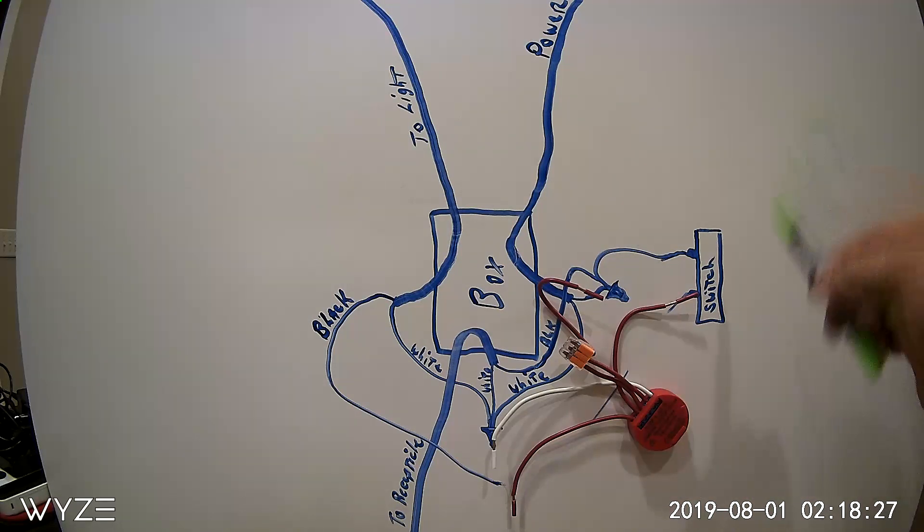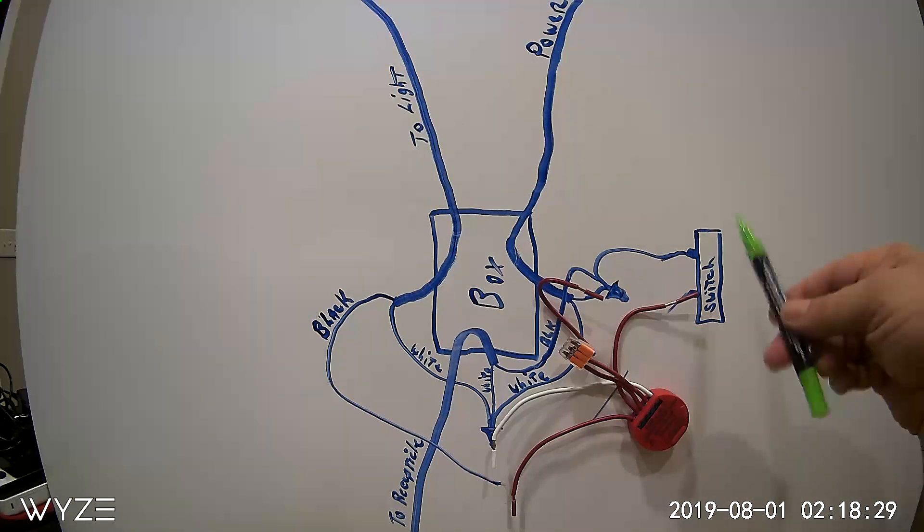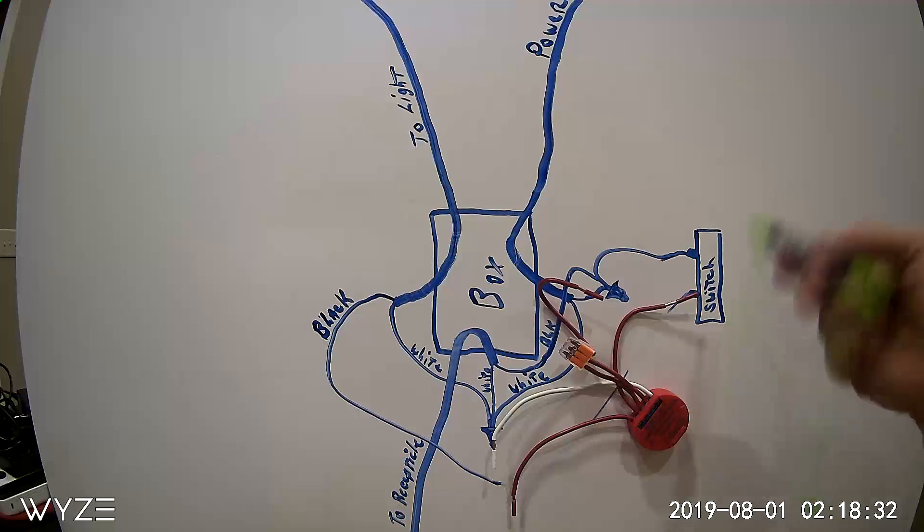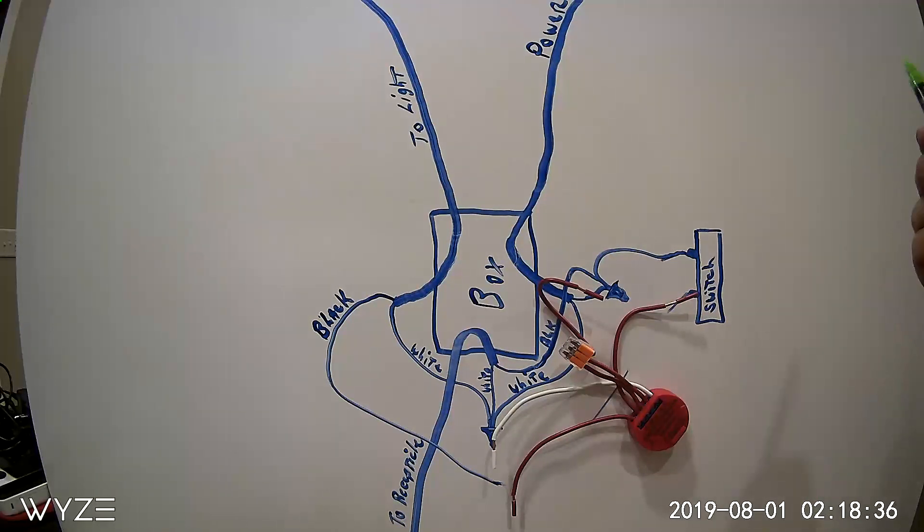So that's basically the setup. With this setup here, your switch will still work normal. Down will still be off and up will still be on when you're using the switch normally.